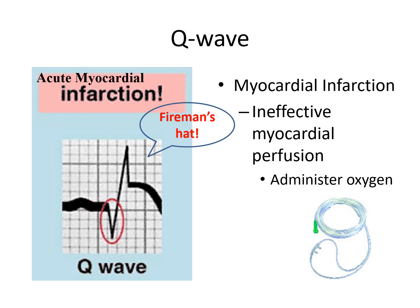The nursing diagnosis for an MI is ineffective perfusion—specifically myocardial, since it is the heart muscle not being perfused effectively. A direct intervention: if something is not being provided with adequate oxygenation, we should administer supplemental oxygen therapy. This is an important intervention when someone is having an acute MI.